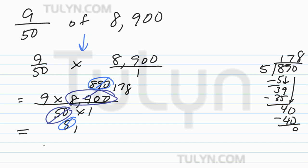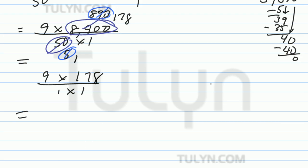So this is 178, so 9 times 178 over 1 times 1. Let me just write that. So 9 times 178, 1 times 1. Let's go ahead and find that.